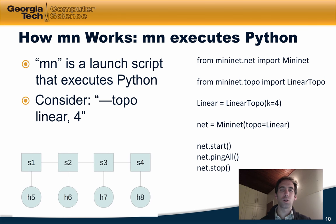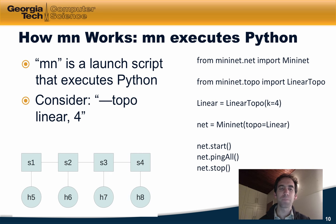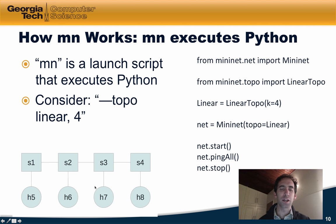Let's take a closer look at how the MN wrapper works. Briefly, MN executes Python under the hood — it is a launch script that executes specific Python code. Consider the option we used before, topo linear 4, which is a linear topology with four hosts each connected to a switch, with the switches connected in a linear topology. Under the hood, that invokes the Python code shown on the right.